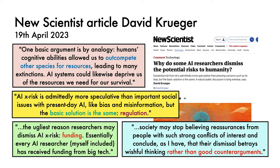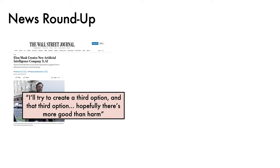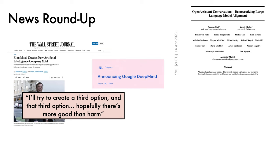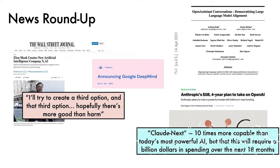A quick roundup of other news. Elon Musk is creating an AI company called x.ai, saying he'll try to create a third option to the dominance of Google and OpenAI, and hopefully there's more good than harm. Google announced a merger of Google Brain and DeepMind, with the updated organisation called Google DeepMind, to be led by Demis Hassabis. The Open Assistant project released a paper describing their large dataset and preliminary findings from instruction fine-tuning a model. TechCrunch reports that Anthropic is raising funds to train Claude Next — a model 10 times more capable than today's most powerful AI — but that this will require a billion dollars in spending over the next 18 months.